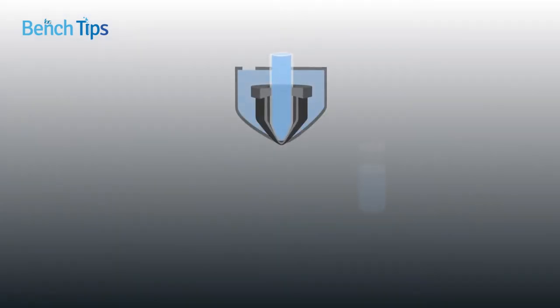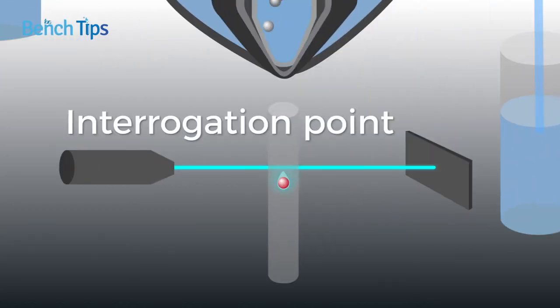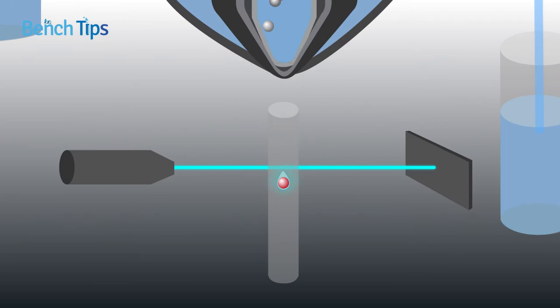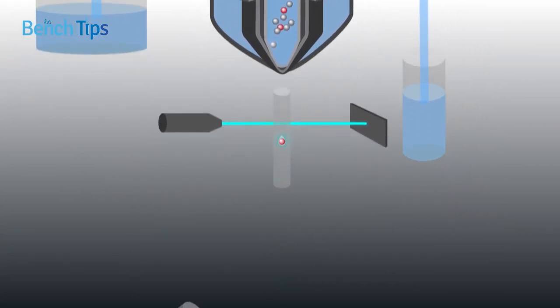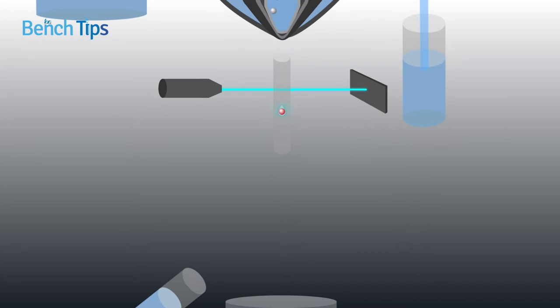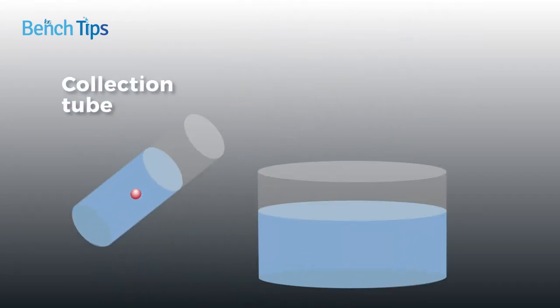As the cells enter the sorter, they are injected into a stream of sheath fluid that is forced through the system under high pressure. They then move past an interrogation point and the stream is partitioned into droplets each containing a single cell. By applying a charge to the droplets containing the cell type of interest, the cell sorter directs the target cells into a collection tube as they pass through an electric field, allowing them to be used for further analysis.